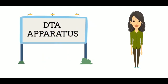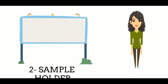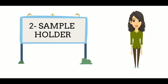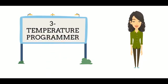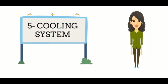The DTA analyzer has the following features: the first part is the furnace, then comes the sample holder, the temperature programmer, the recording system, and the cooling system.